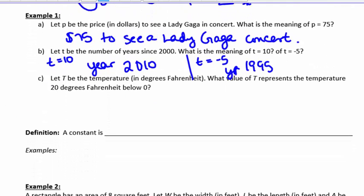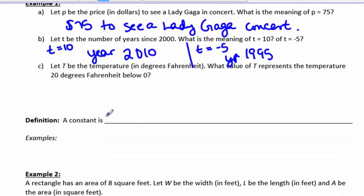Part C, let T be the temperature in degrees Fahrenheit. What values of T represent the temperature 20 degrees Fahrenheit below zero? 20 degrees below zero would be the temperature T equals negative 20.